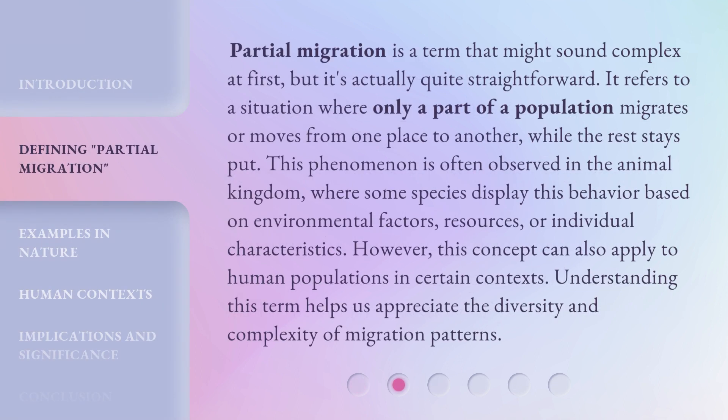Partial migration is a term that might sound complex at first, but it's actually quite straightforward. It refers to a situation where only a part of a population migrates or moves from one place to another, while the rest stays put. This phenomenon is often observed in the animal kingdom, where some species display this behavior based on environmental factors, resources, or individual characteristics. However, this concept can also apply to human populations in certain contexts. Understanding this term helps us appreciate the diversity and complexity of migration patterns.